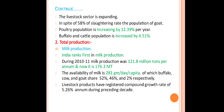There are various productions from livestock. The first one is milk production. India ranks first in milk production — during 2010-11 milk production was 121.8 million tons per annum, and now it is 176.3 million tons. The average availability of milk is 281 grams per day per capita. Buffalo, cow, and goat contribute 52.52 percent, 46 percent, and 2 percent respectively.